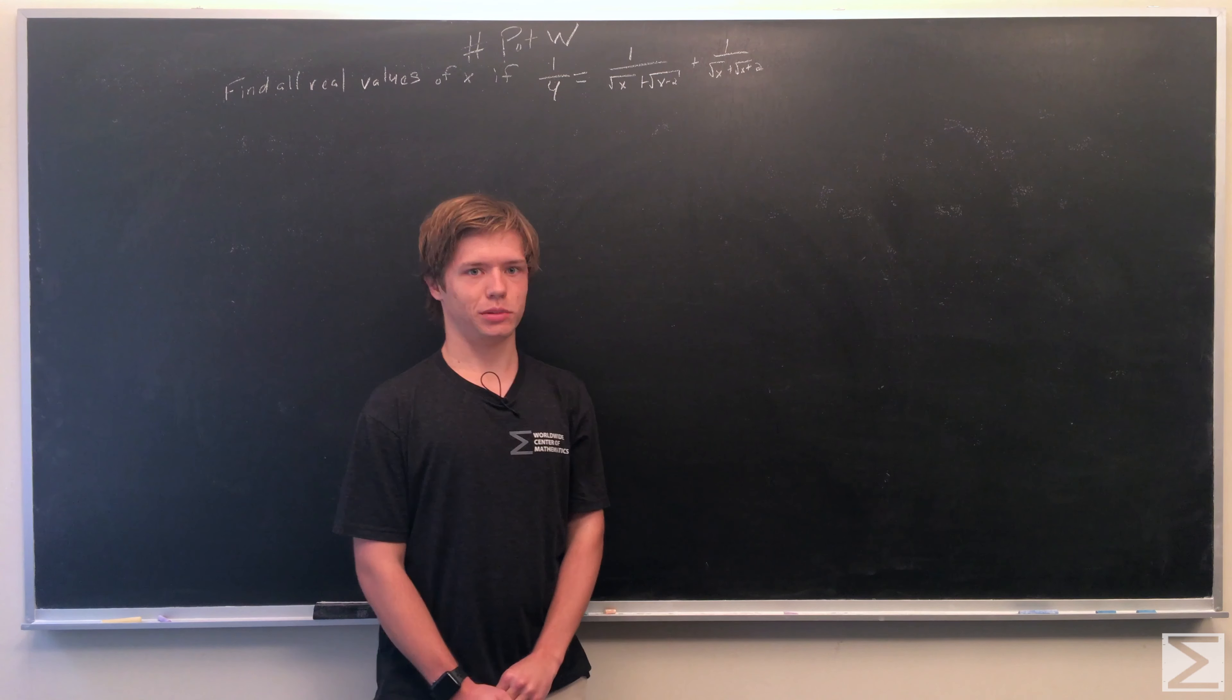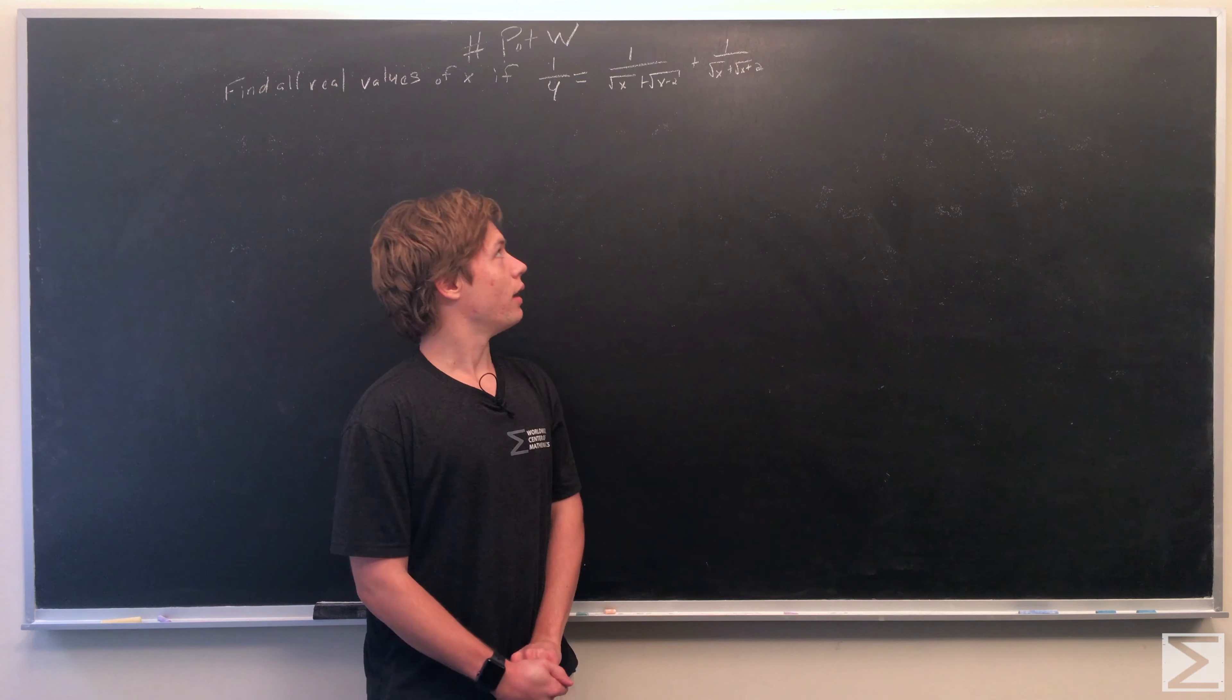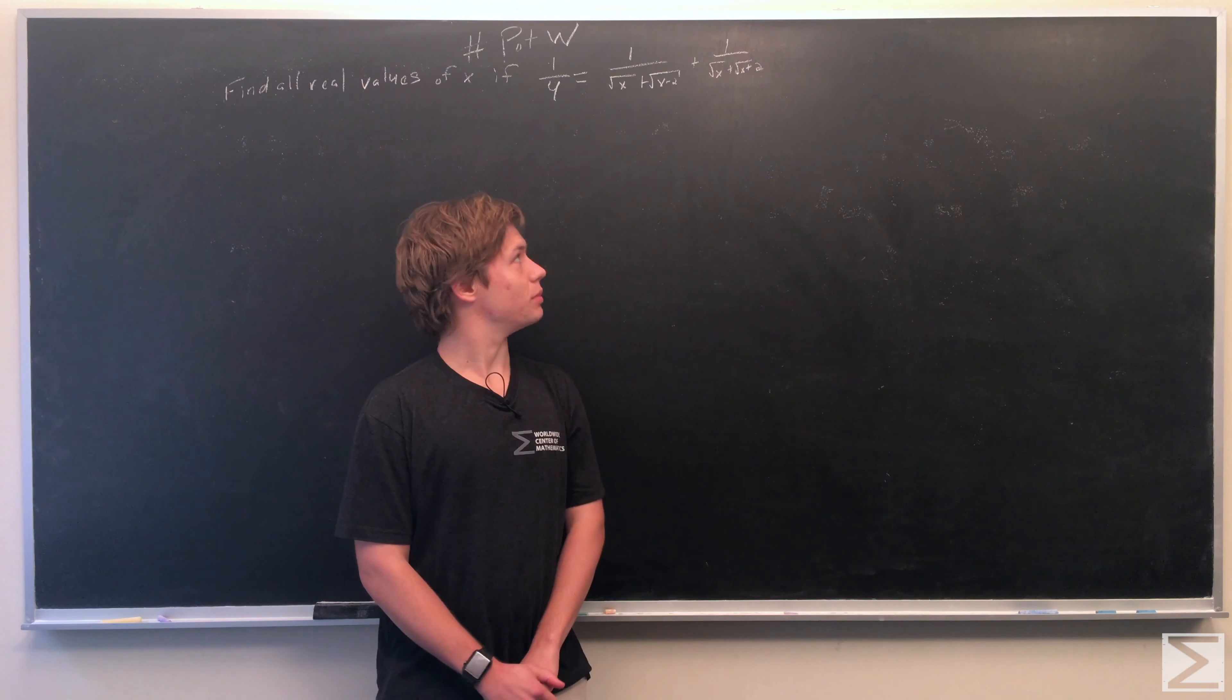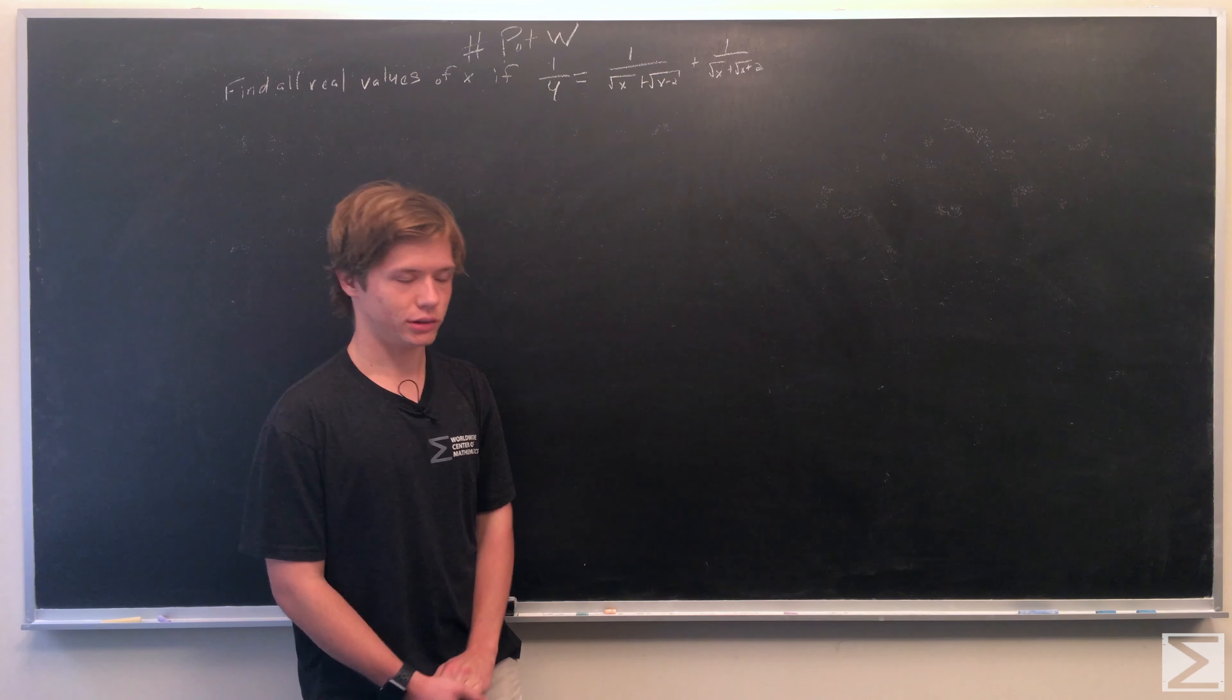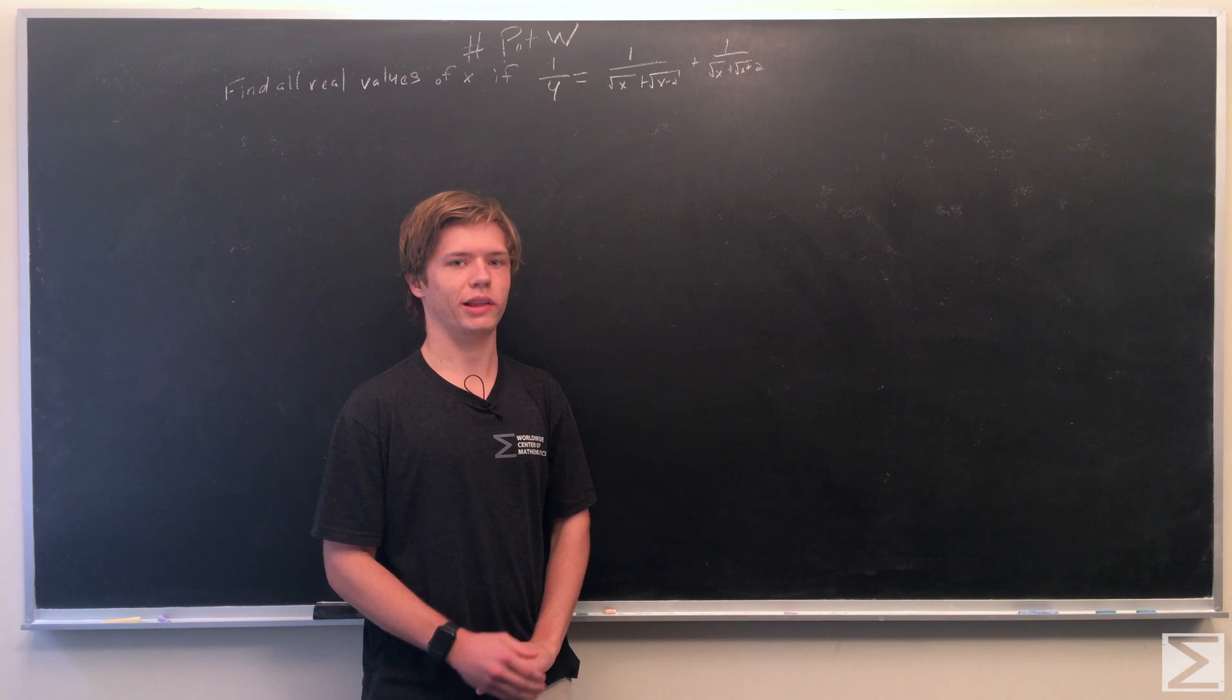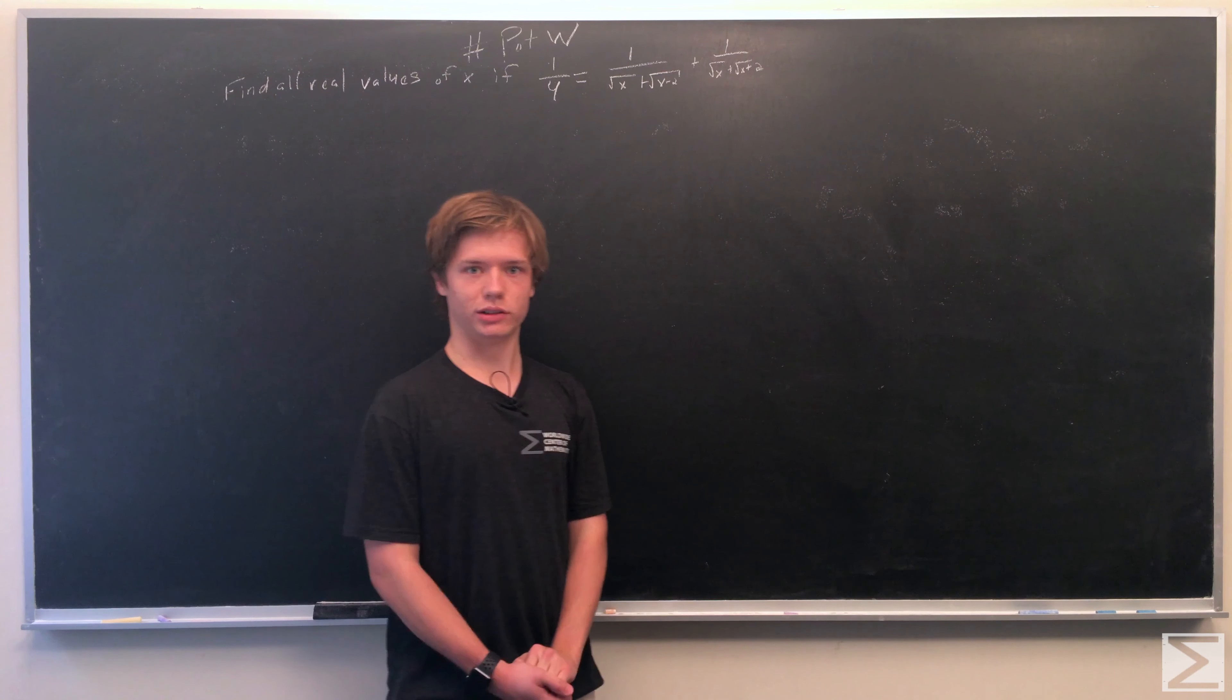For the second term, multiply 1 over (√x + √(x+2)) by (√(x+2) - √x). We multiply top and bottom so it's still equal to 1. We'll do that for both terms.